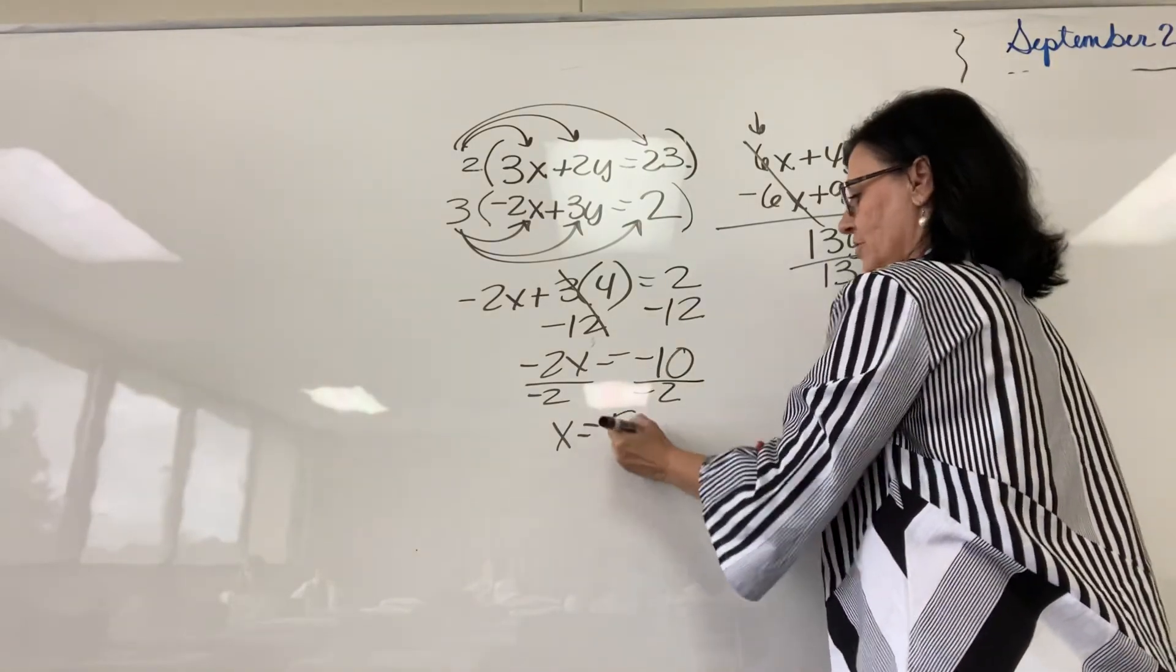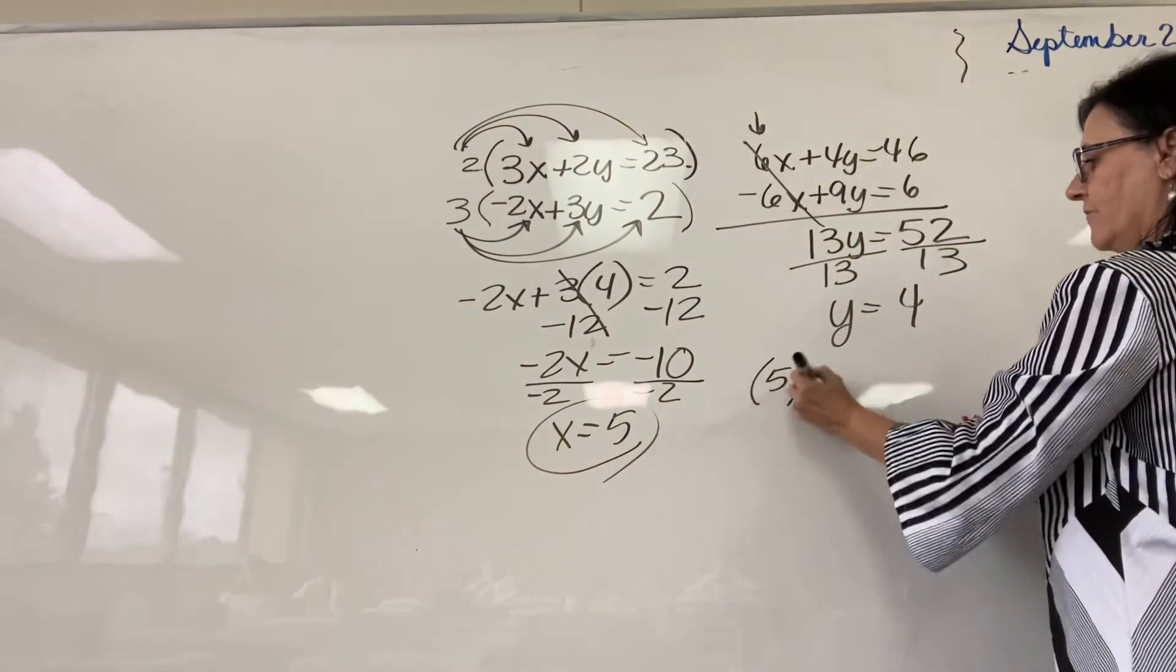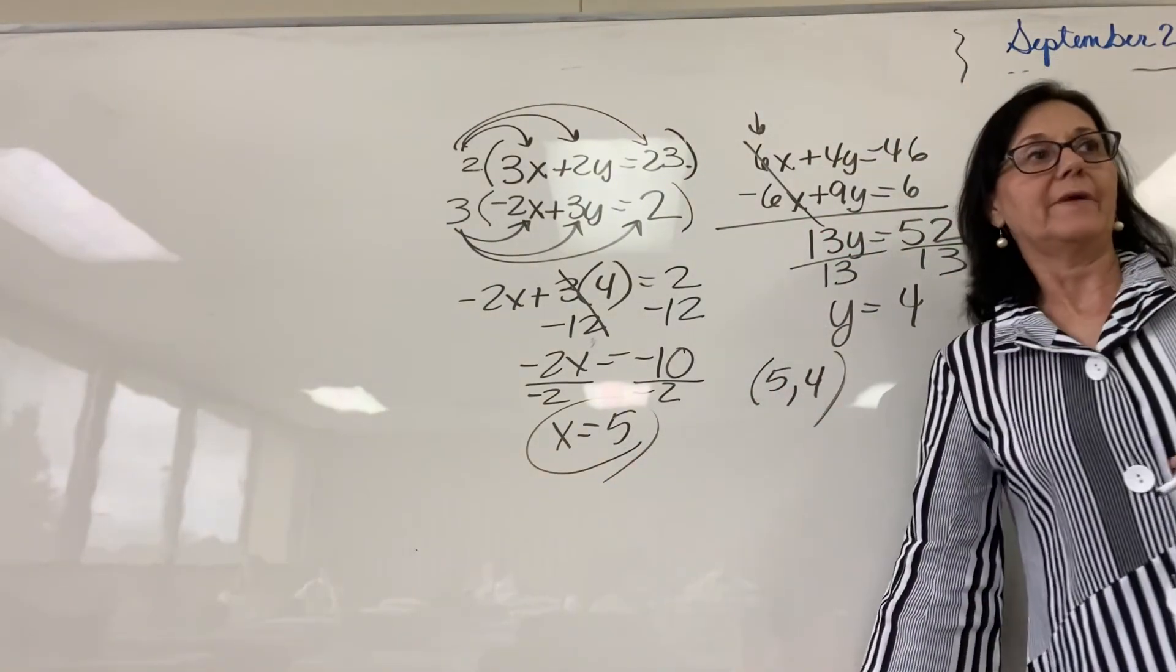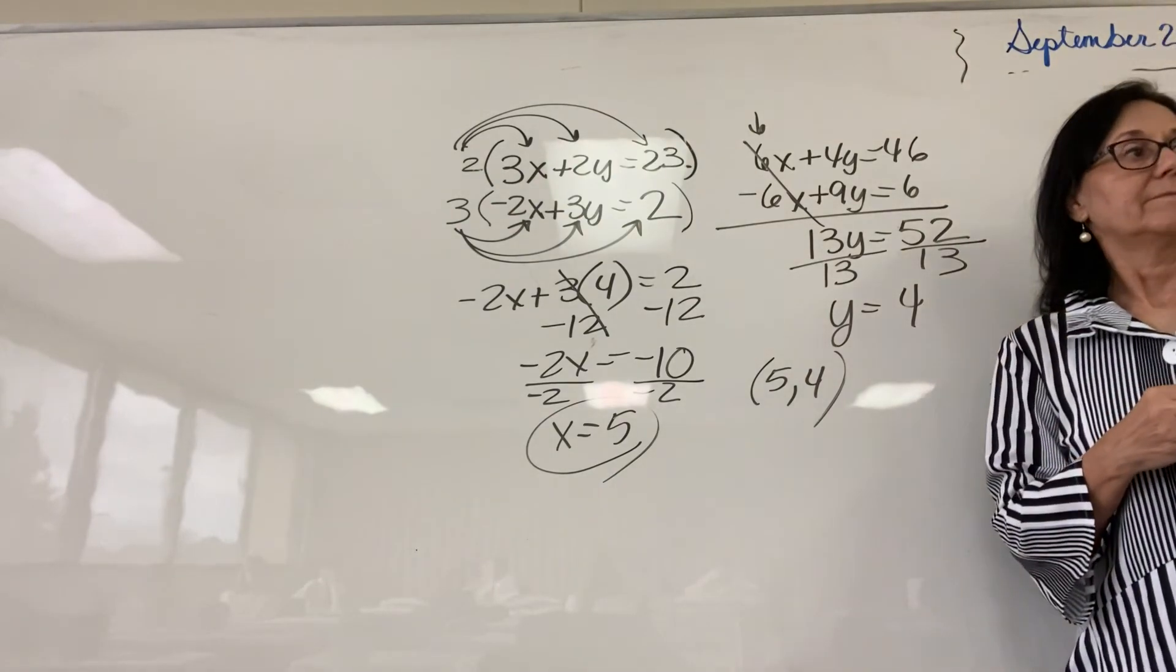2 mistakes in one problem, huh? 5, 4. That's my coordinate pair. Make sense?